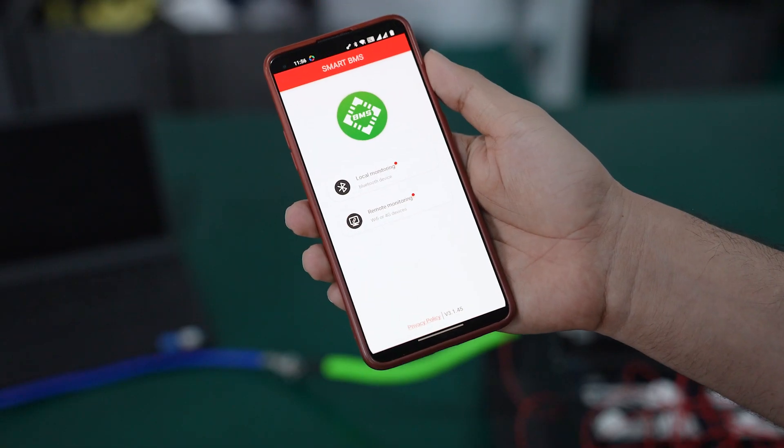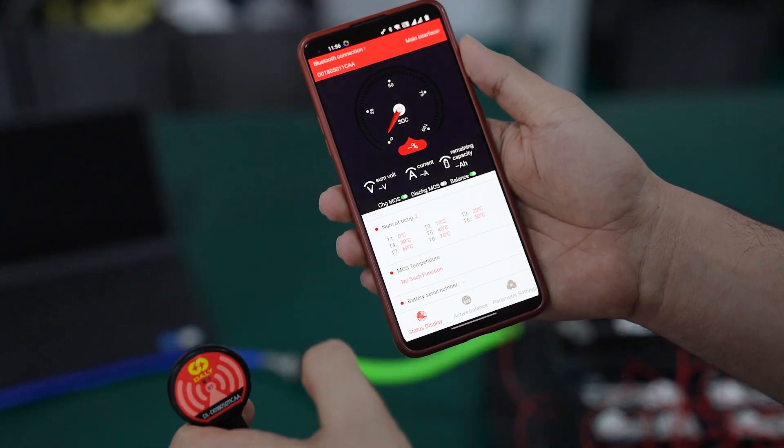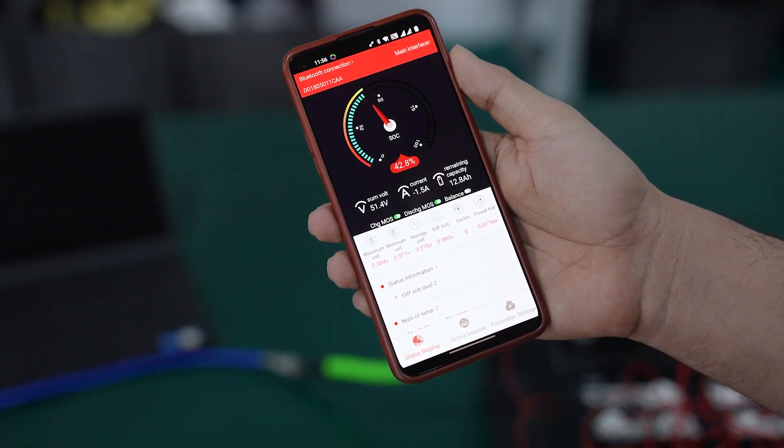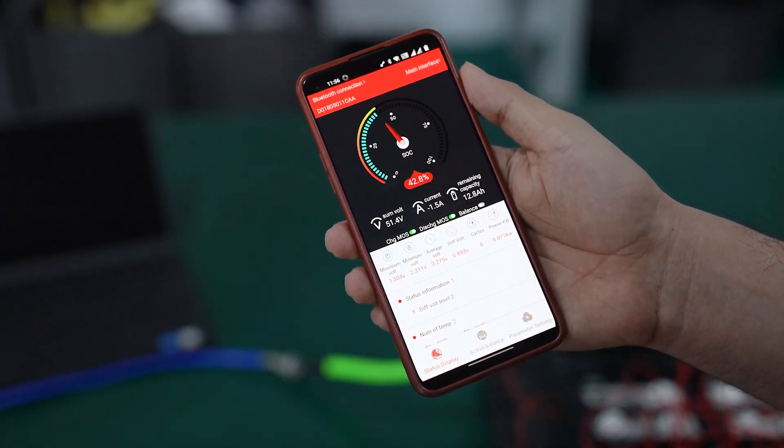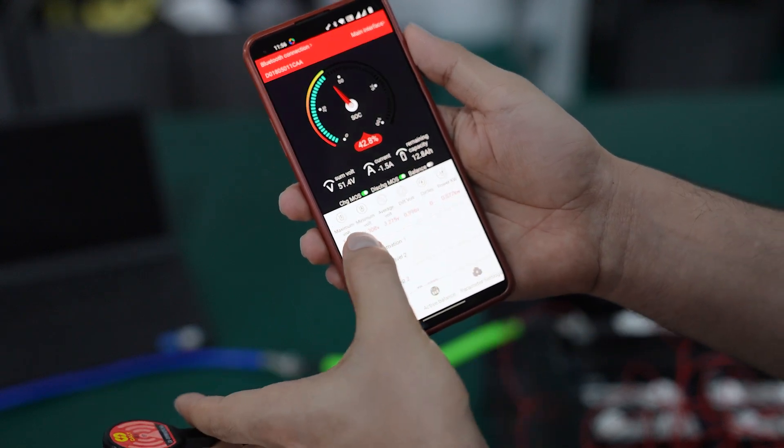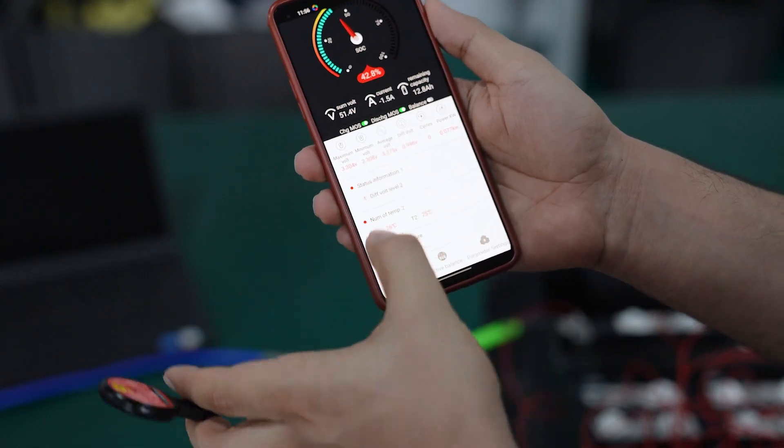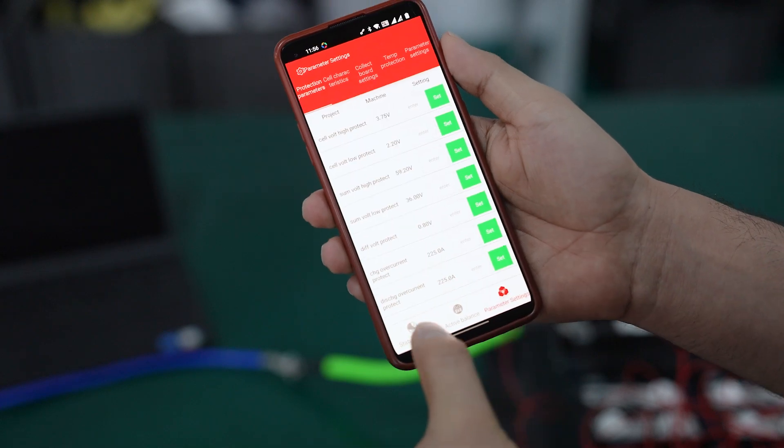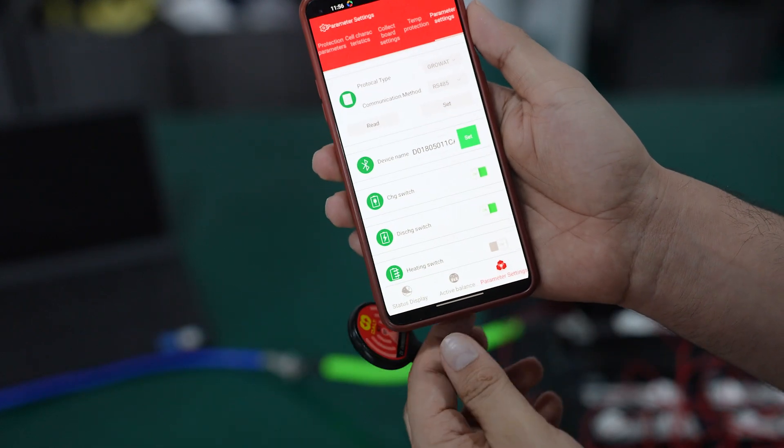You can use the Bluetooth app to connect. Here you can see all the information about your battery pack: the overall voltage, individual cell voltages, maximum and minimum voltages. You can see everything here. Now go to parameter settings.